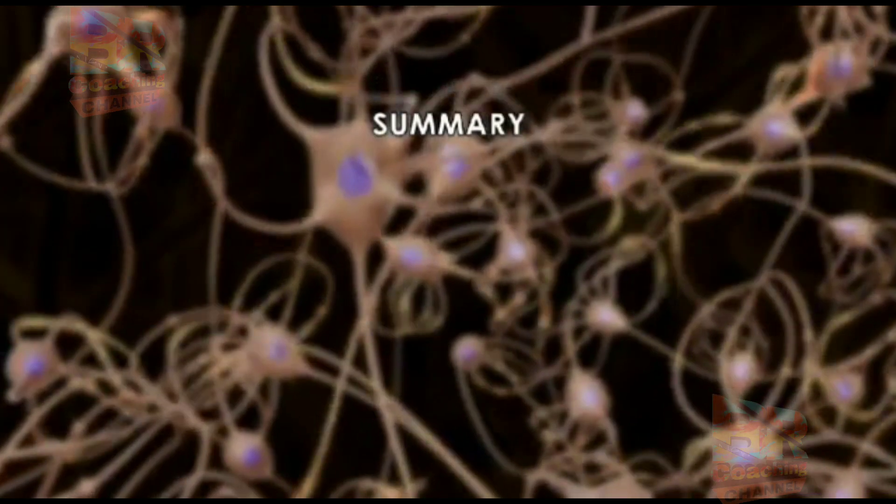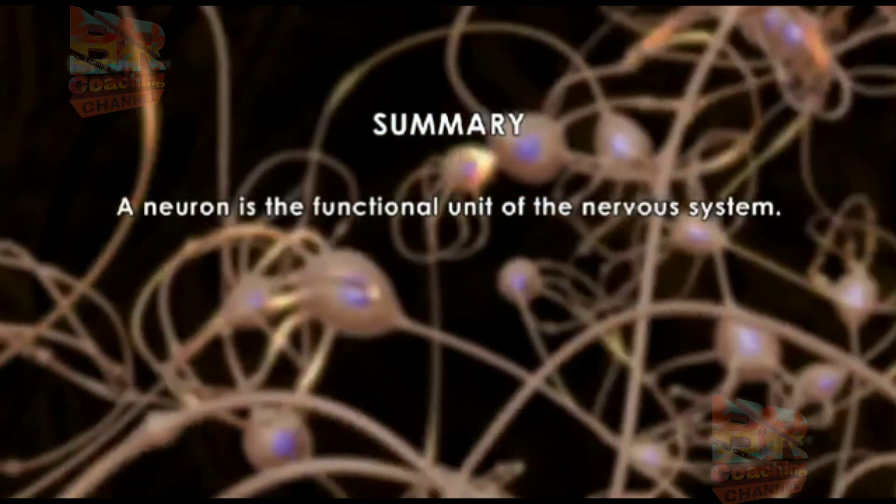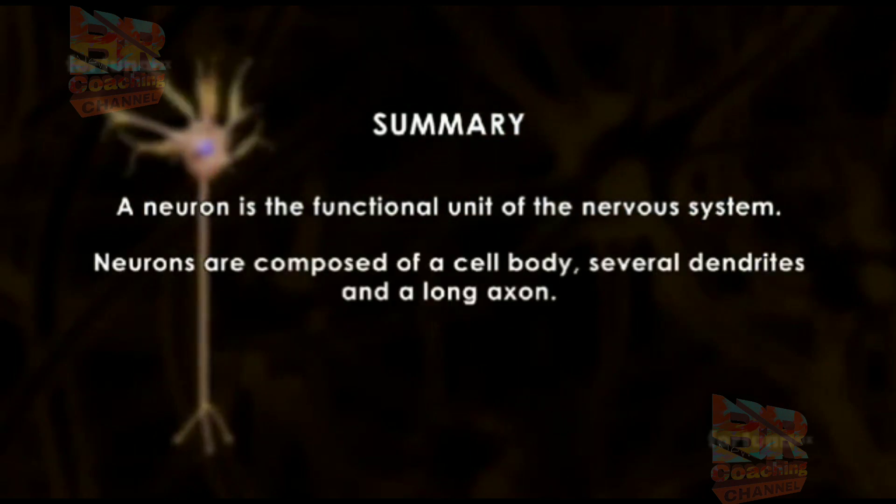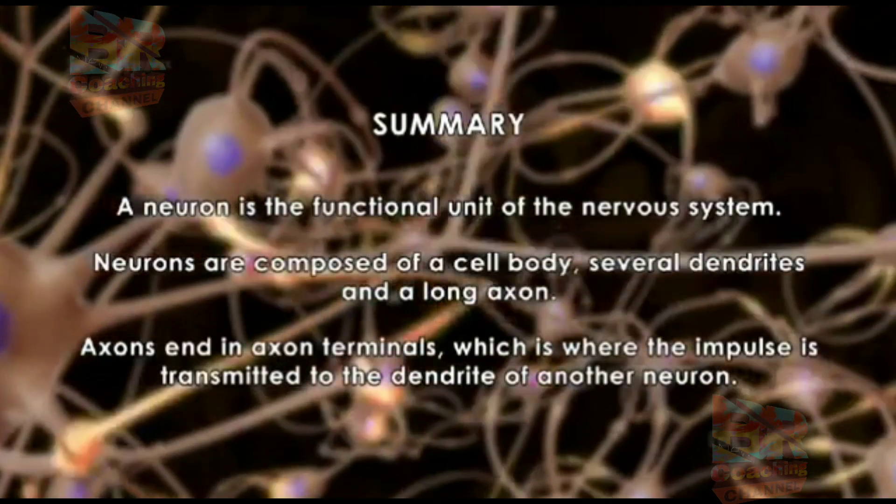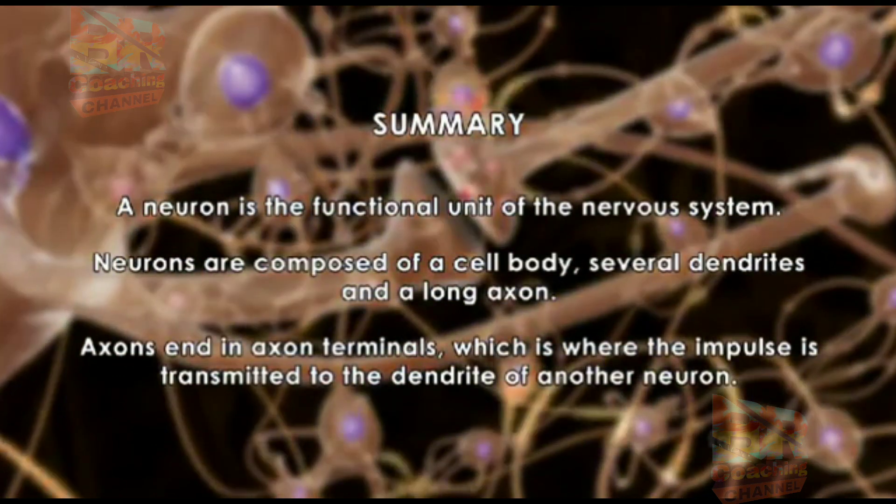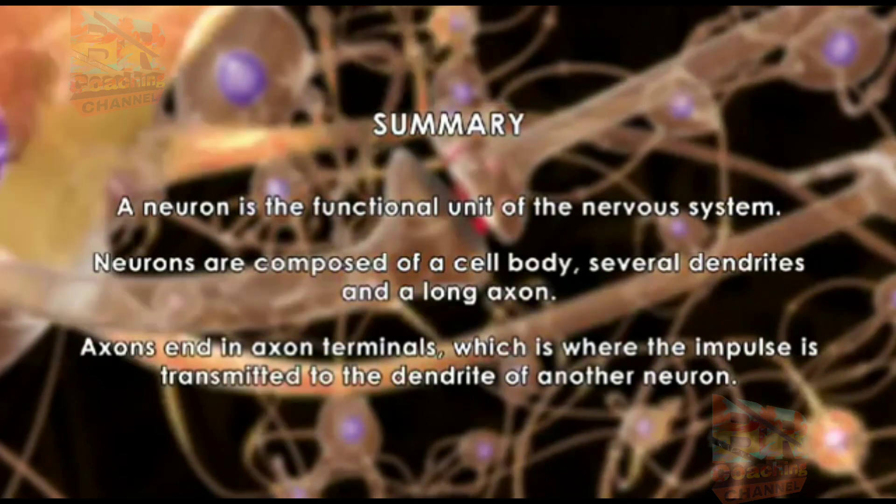Summary: A neuron is the functional unit of the nervous system. Neurons are composed of a cell body, several dendrites, and a long axon. Axons end in axon terminals, which is where the impulse is transmitted to the dendrite of another neuron.